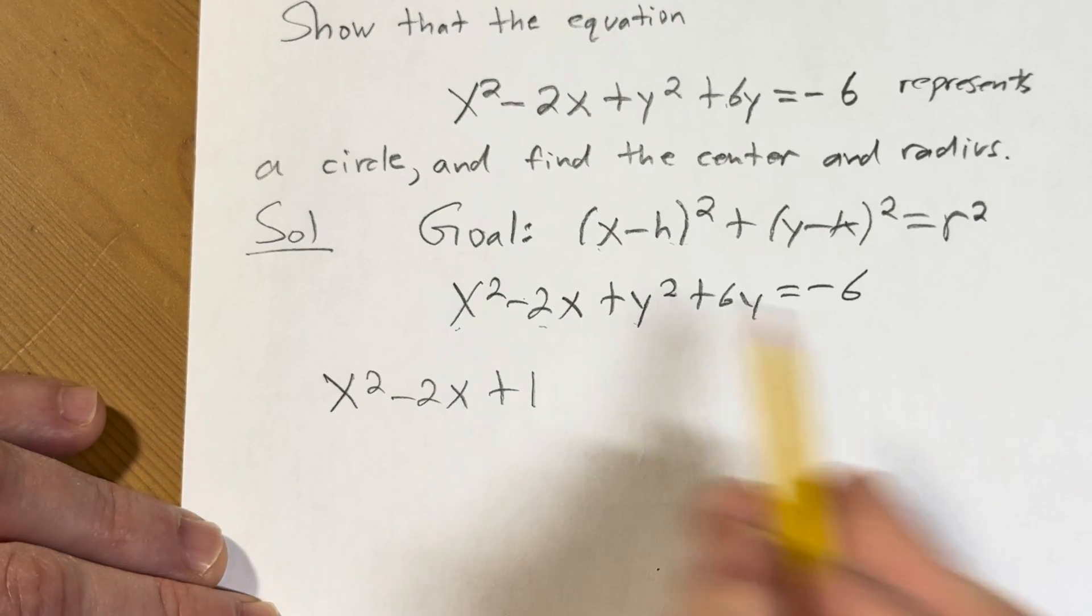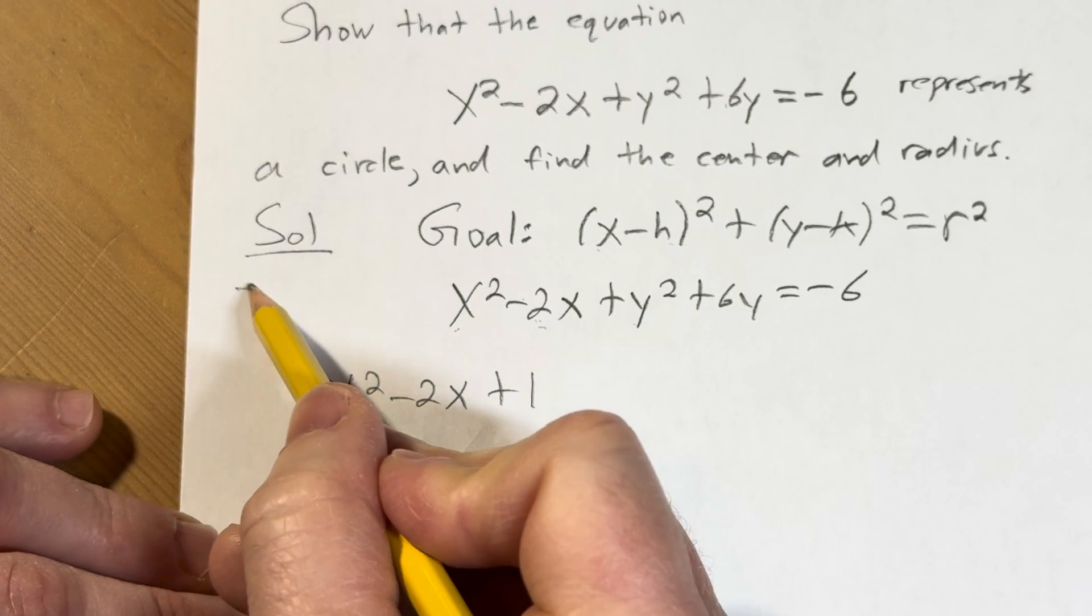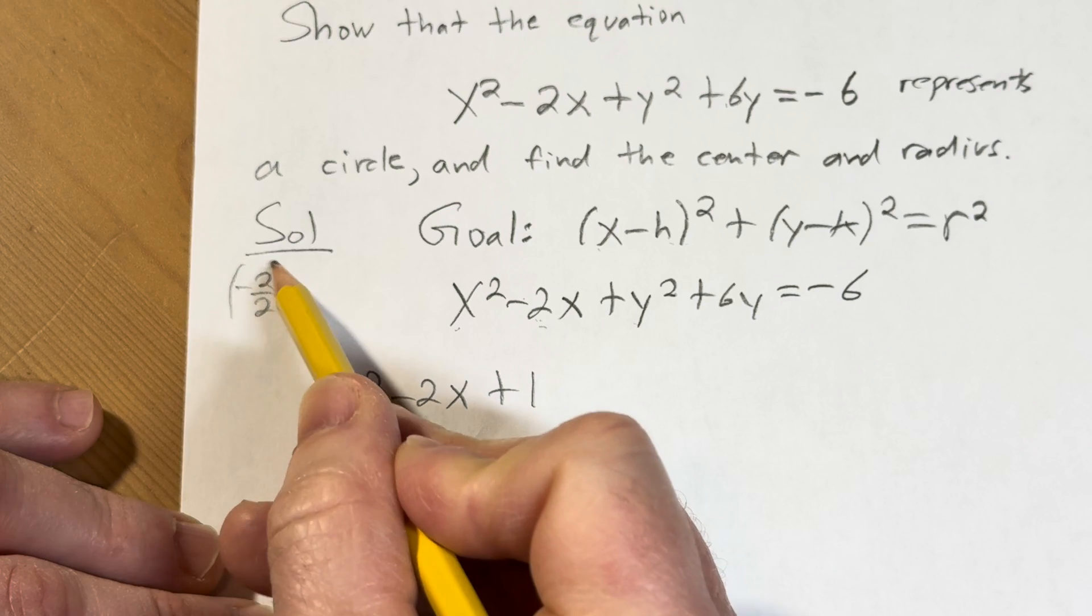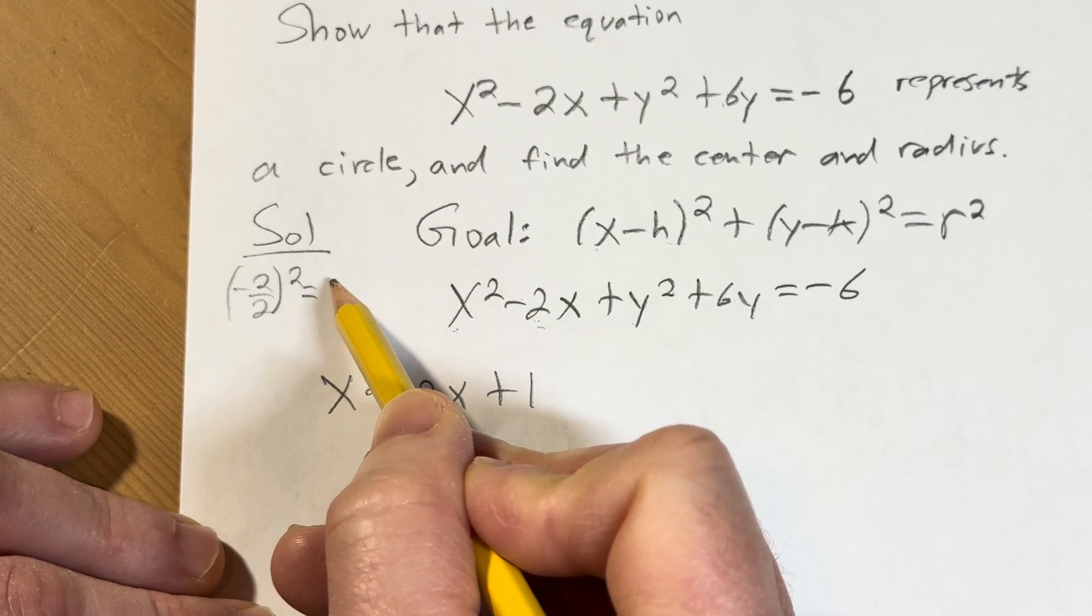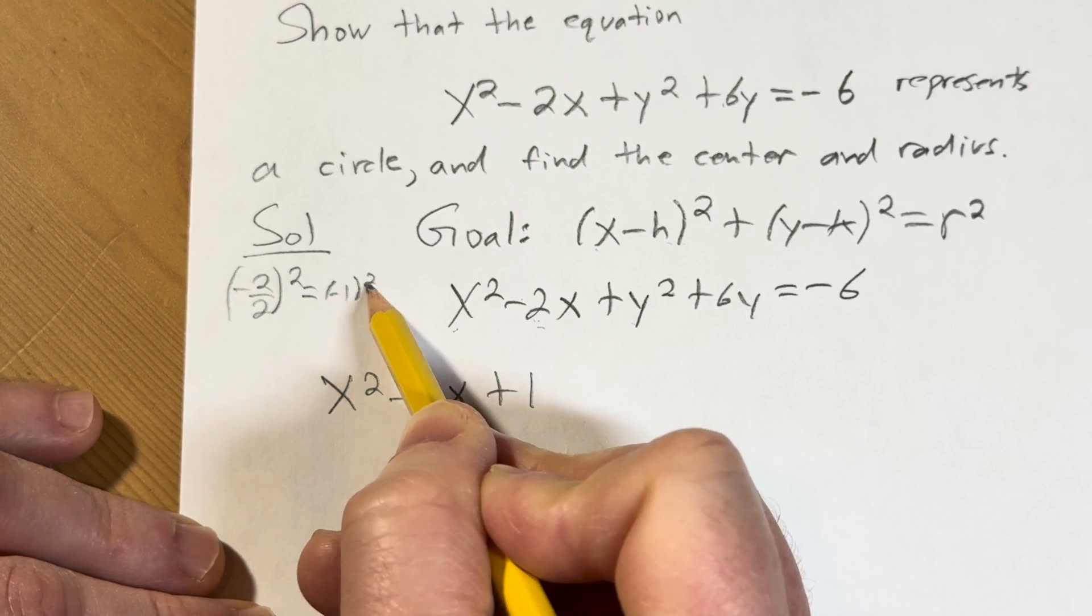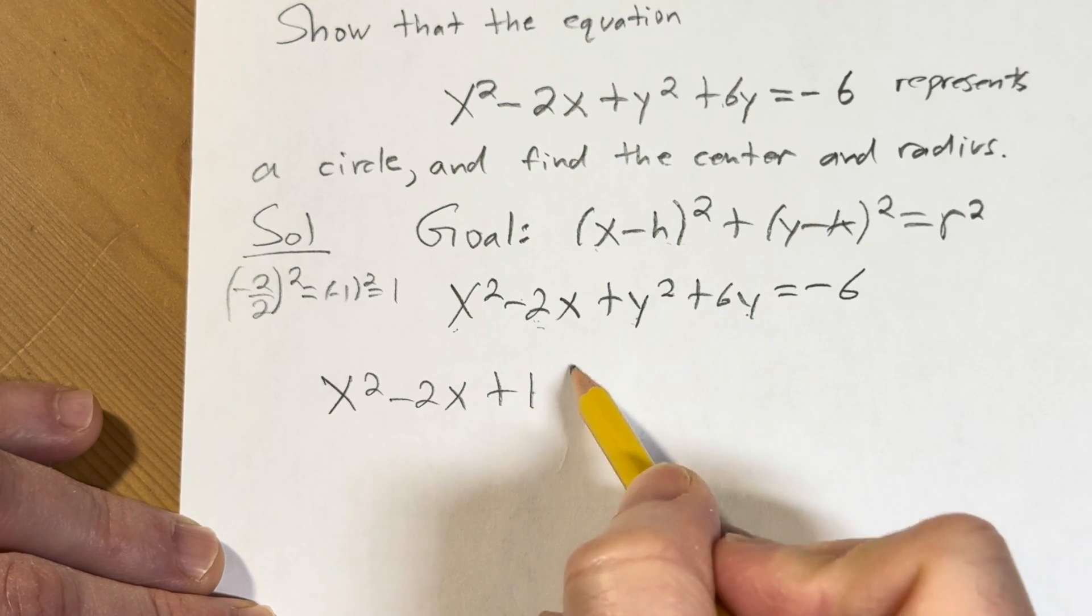So how'd you do that? You take this number, the coefficient of x, divide it by 2 and square it. So it'll be negative 1 squared, which is 1. Boom. Let's do it again, you write this down.